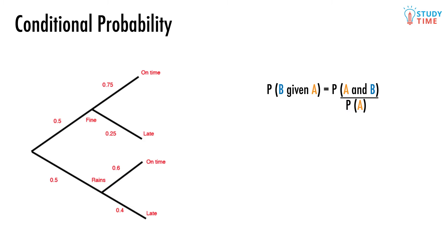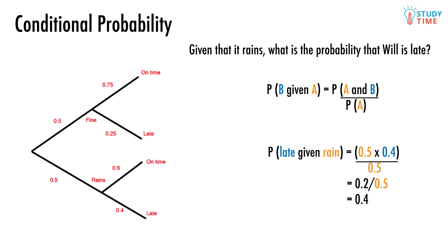Here's an example. Given that it rains, what is the probability that Will is late? So we begin by asking what is the probability that it both rains and that Will is late? We can quickly calculate that this is 0.2, but the question's not over yet. We still need to do something with the condition. The condition here is given that it rains, which means that we need to take our probability 0.2 and divide it by the probability that it rains, which is 0.5. So we get the probability that Will is late given that it rains equals 0.2 divided by 0.5 equals 0.4.